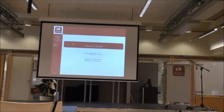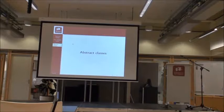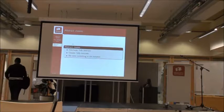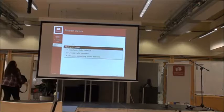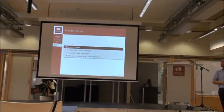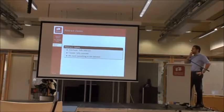Abstract classes sit between interfaces and concrete classes. Interfaces are completely abstract — you always just declare a signature and that's it. With classes, everything is concrete: you define attributes and methods with a body. Sometimes there is a necessity for something in between.